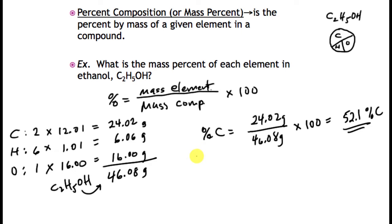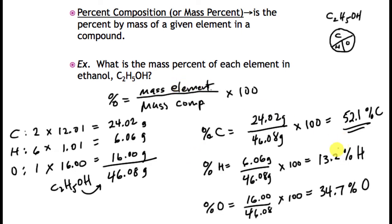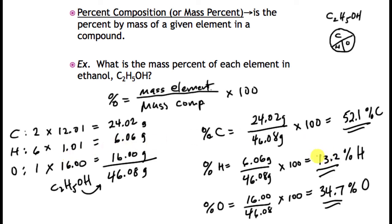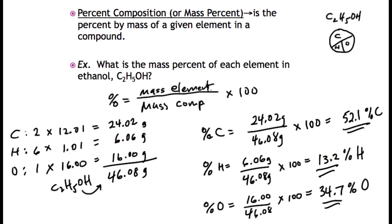I did the same calculation for hydrogen and oxygen. Here are my three percentages. You can clearly see that carbon contributes just over half the mass — that makes sense since carbon's mass is 24 out of 46 grams. Hydrogen, even though there are more hydrogen atoms in this compound, is very light, so it doesn't contribute much to the mass and therefore has the lowest percentage.